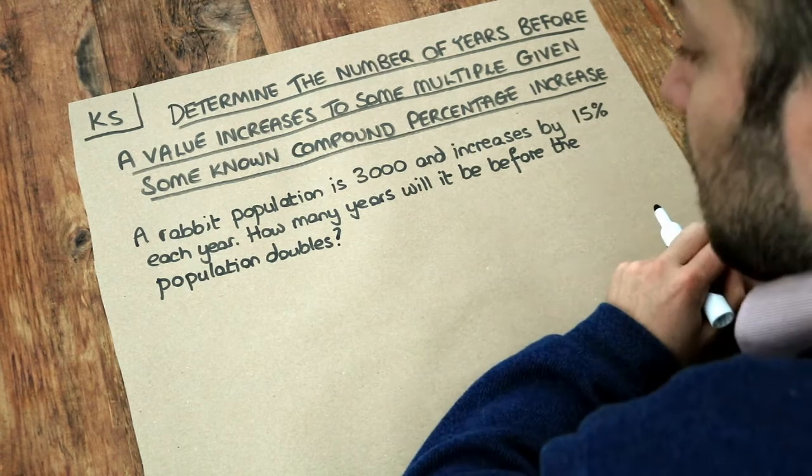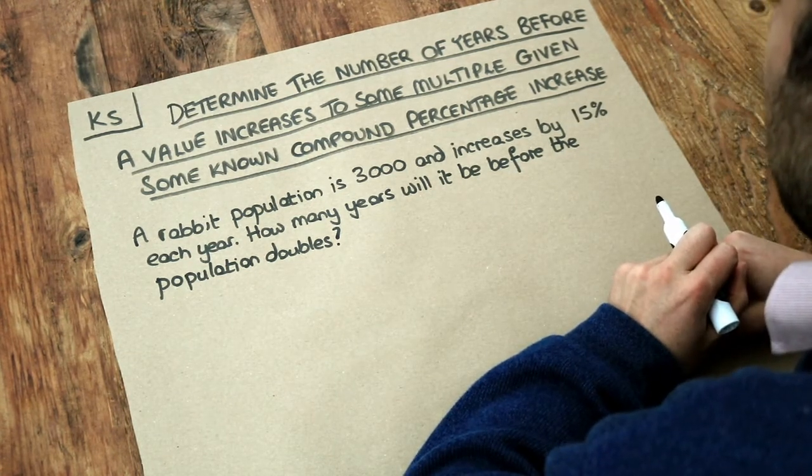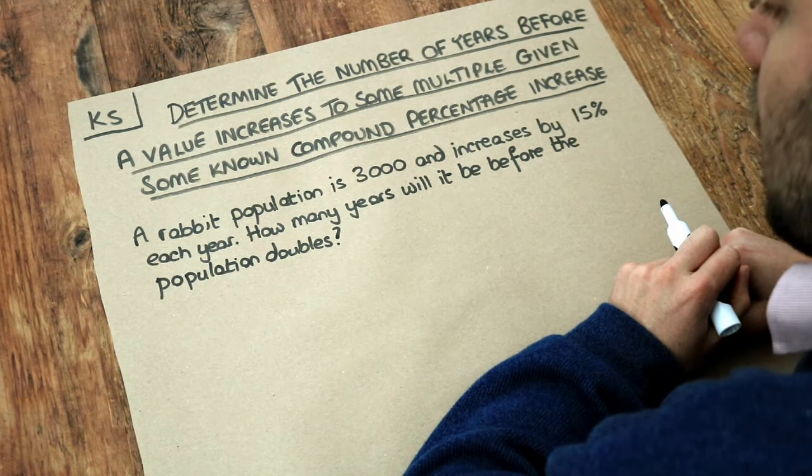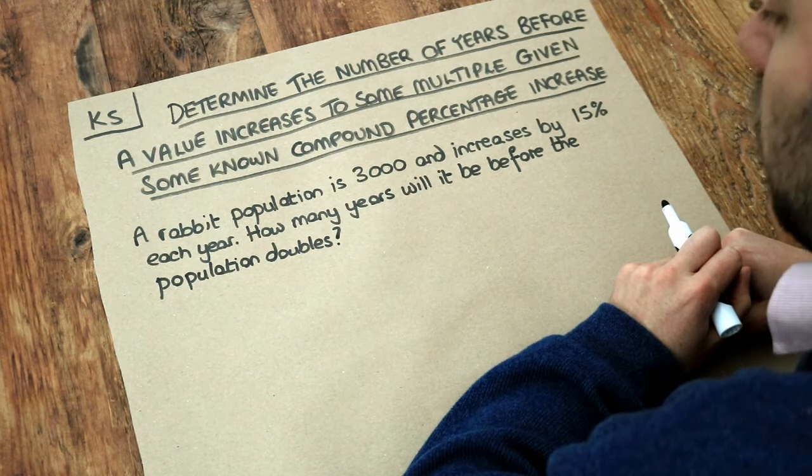So let's read the problem first. A rabbit population is 3,000 and increases by 15% each year. How many years will it be before the population doubles?